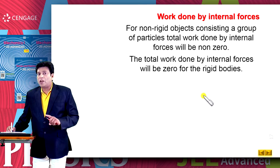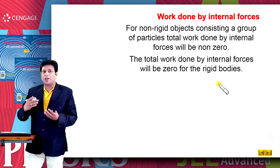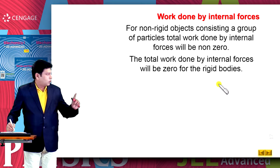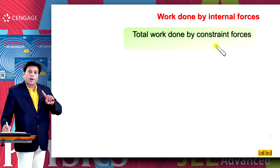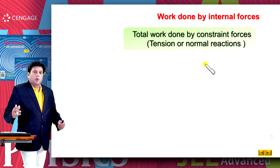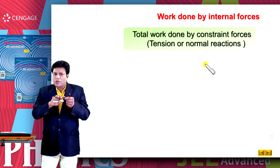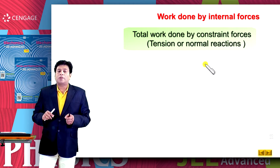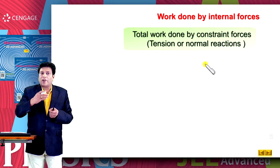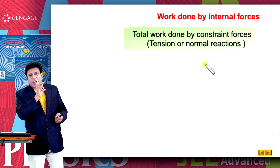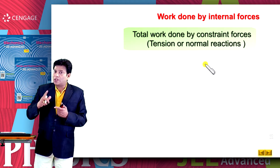Let us discuss work done by the internal forces. We will cover internal forces like the tension force, normal reaction, friction force, and spring force. Let us first discuss work done by the constraint forces — that means the tension force and normal reaction. In the case of a string, there is no relative separation between two particles in the string. Similarly, for a rod, there is no relative displacement between any two particles situated on the rod. That means work done by the tension force on the system should be zero.